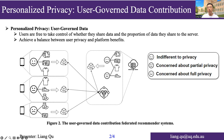As shown in this figure, for example, for users who are indifferent to privacy, they can upload all their interaction data with items to the platform, helping the platform to train a more accurate recommendation model to provide a better recommendation service. For users who are concerned about partial privacy, they can choose to upload part of the data, and for users who are concerned about full privacy, they can keep all the data local. In this way, we can implement a more flexible privacy framework for the federated recommendation system, achieving a balance between user privacy and platform benefits.